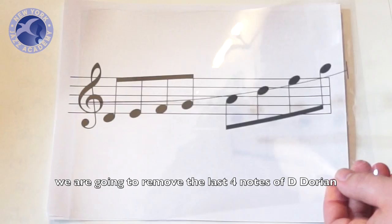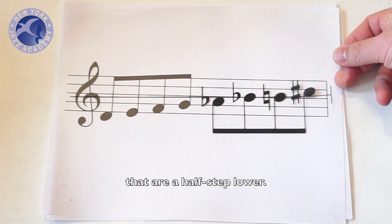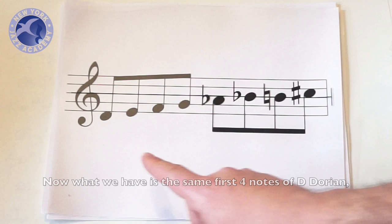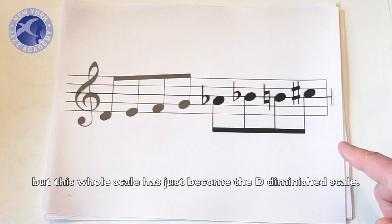So here's the D Dorian again, except we are going to remove the last four notes of D Dorian and put in a new set of four notes on the top that are a half step lower. Now what we have is the same first four notes of D Dorian, but this whole scale has just become the D diminished scale.